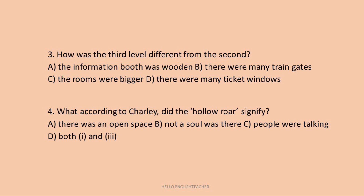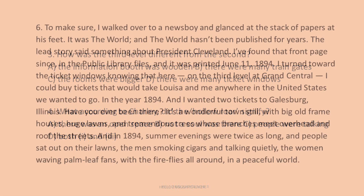Question 3: How was the third level different from the second? Options: the information booth was wooden; there were many train gates; the rooms were bigger; there were many ticket windows. The answer is A — the information booth was wooden. Question 4: What did the hollow roar signify according to Charlie? Options: there was an open space; not a soul was there; people were talking; both one and three. The answer is D — both one and three.